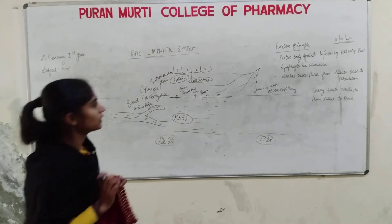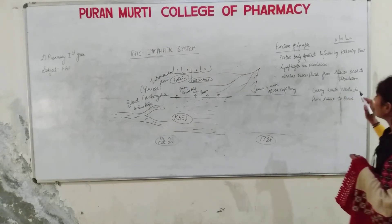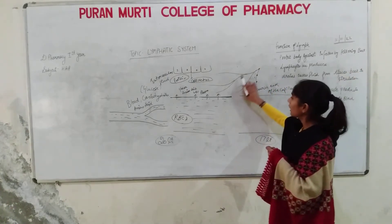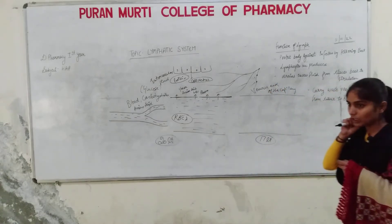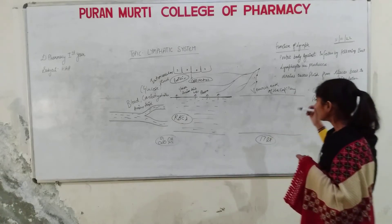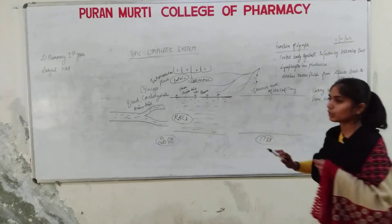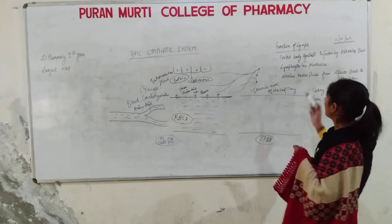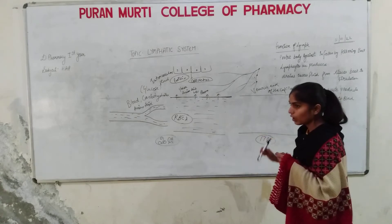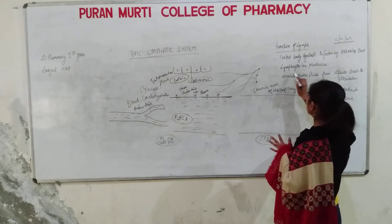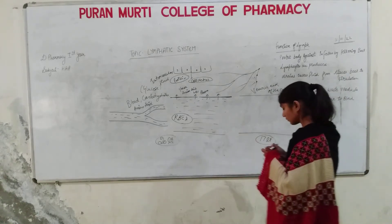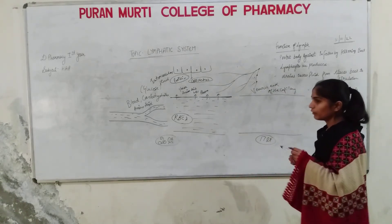The functions of lymph: First, lymph protects the body against infection by filtering bacteria. When lymph travels through lymphatic capillaries, bacteria and microbes present in it are filtered out through lymphatic organs and lymph nodes, so all microorganisms are removed and pure lymph is formed. Second, lymphocytes are produced in the lymphatic system.